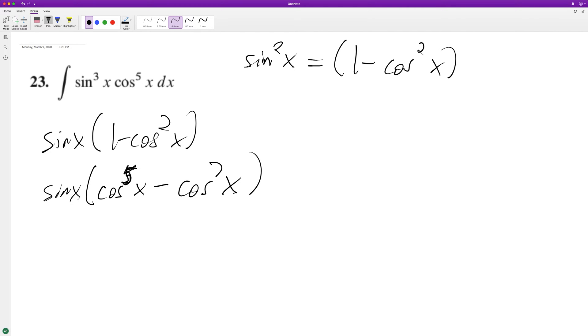And then this is going to be dx. So we'll set u equal to cosine of x and du is going to be equal to negative sine of x.